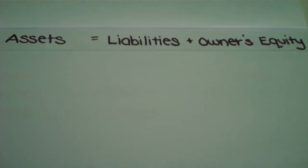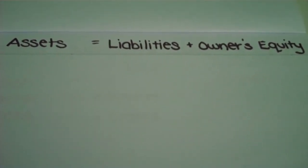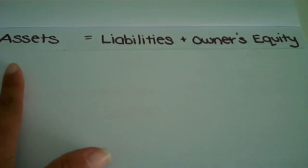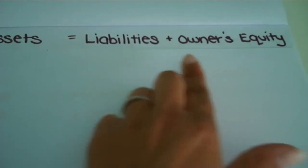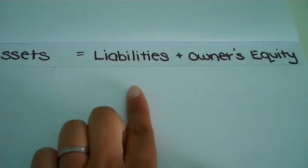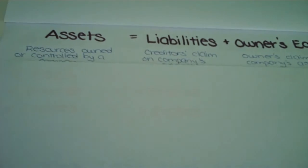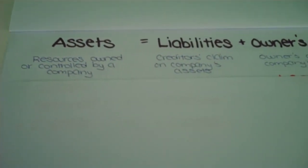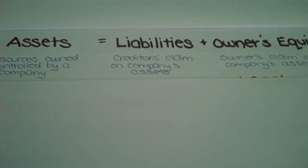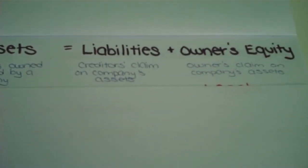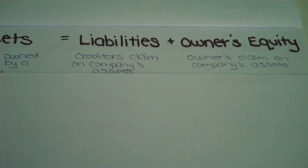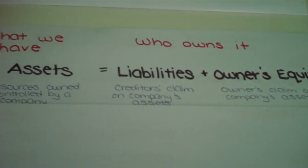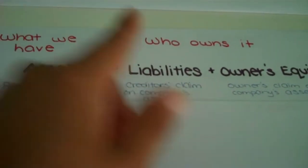It is important for us to remember this basic equation. It basically says that all of the company's assets or resources are owned either by the owner of the company or outside external parties. Assets are resources owned or controlled by a company. Liabilities are a creditor's claim on the company's assets. And owner's equity is the owner's claim on the company's assets — or simply put, what the company has and who owns it.